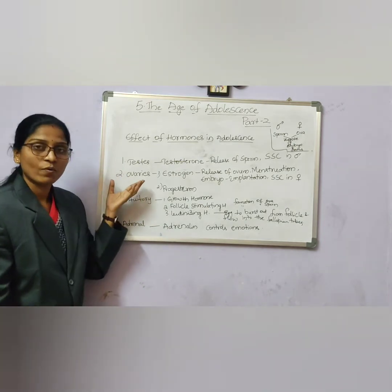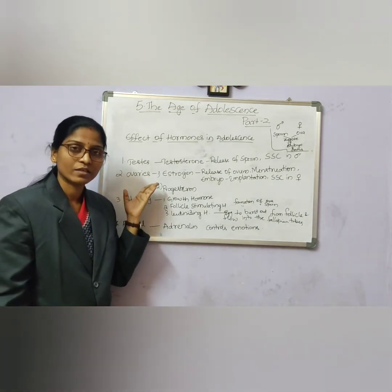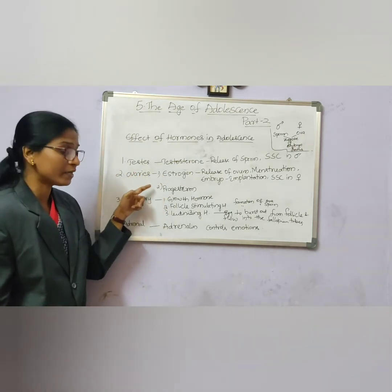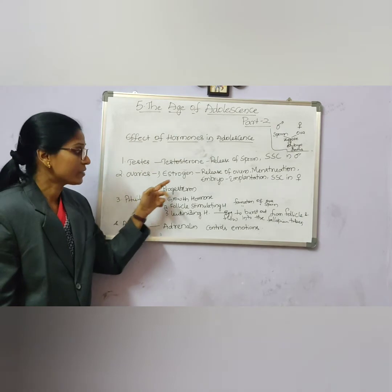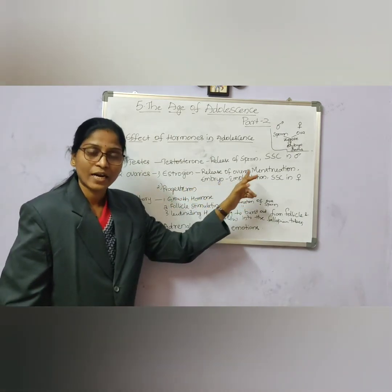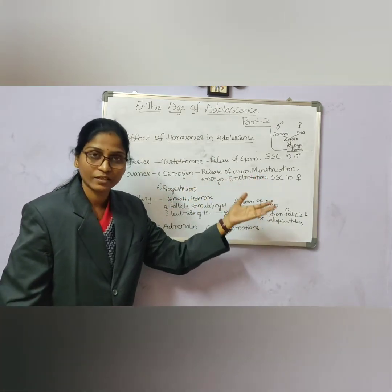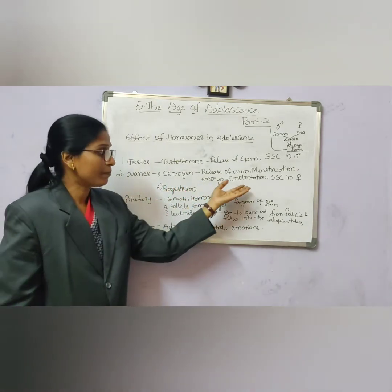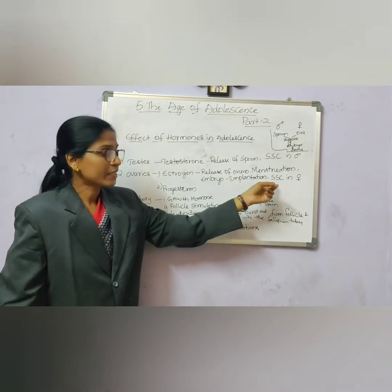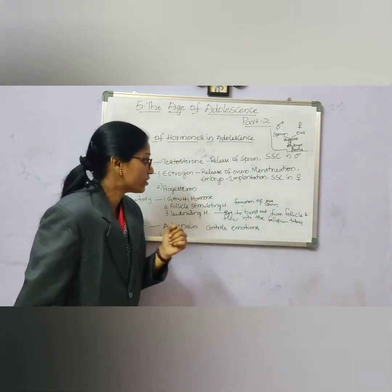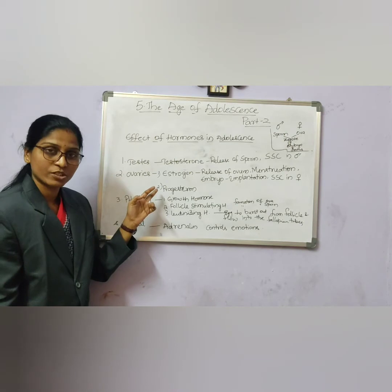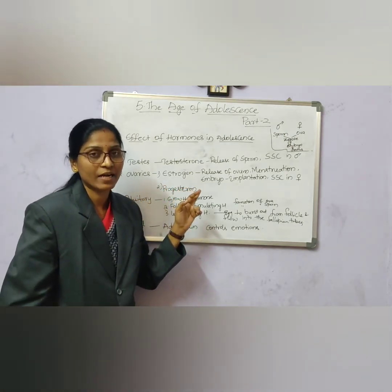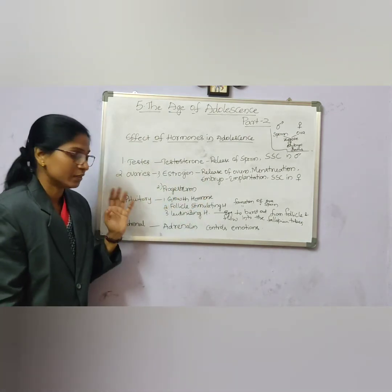The second gland is the ovaries. Ovaries produce two different hormones — estrogen and progesterone. These help in the release of ovum and attainment of maturation in adolescent girls, development and implantation of the embryo, secondary sexual characters in females, and also secretion of milk in the mammary glands.